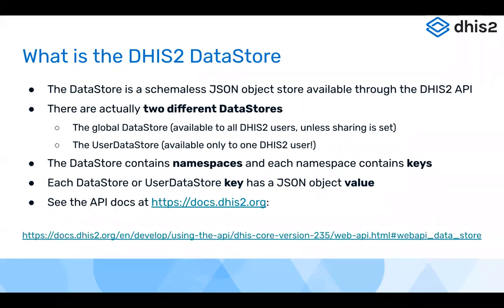Within the data store and the user data store, there are namespaces. These namespaces are basically a collection of key-value pairs. Usually an application will use one namespace and store any information it wants to keep track of into the keys and values within that namespace. There's a lot more information about how to do this through the API and how the data store is structured in the documentation at docs.dhis2.org — we'll share the slides after this. You can also view the data store through the data store application in your DHIS2 instance to explore namespaces, keys, and values.